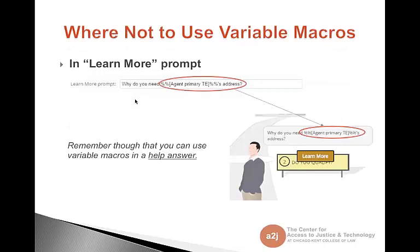So let's talk about where you can't use a variable macro. As mentioned previously, you can't use a variable macro in a learn more prompt. In the screenshot before you, you'll see that I'm attempting to use it — asking the question 'why do you need' and using the agent variable — 'why do you need their address' as a learn more prompt. As you can see in the other screenshot, not so successful.